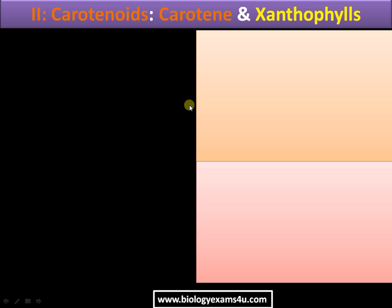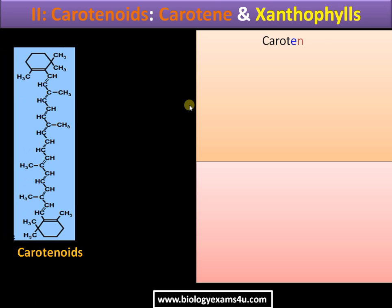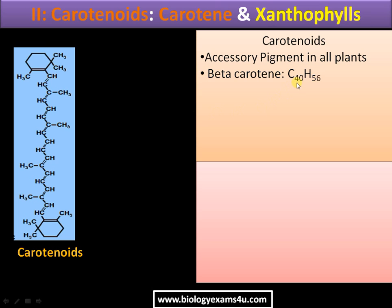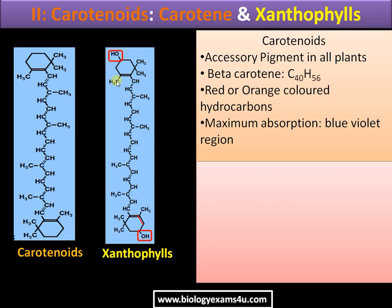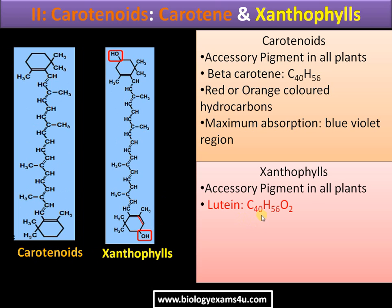The second class of accessory pigments is the carotenoids, which include carotene and xanthophyll. Carotenoids are accessory pigments in all plants. Beta-carotene is an example, with formula C40 H56; it is a red or orange-colored hydrocarbon with maximum absorption in the blue-violet region. Xanthophylls are oxygenated carotenes — for example lutein, C40 H56 O2.